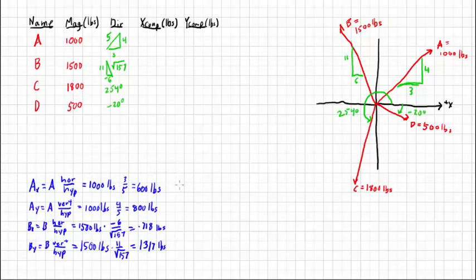For C we're going to use the angled equations using our trigonometric functions cosine and sine, so it's going to be C times the cosine of theta. C 1800 pounds times the cosine of 254 degrees, negative 496 pounds.